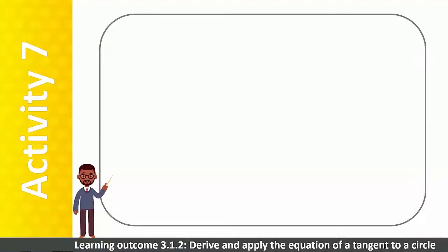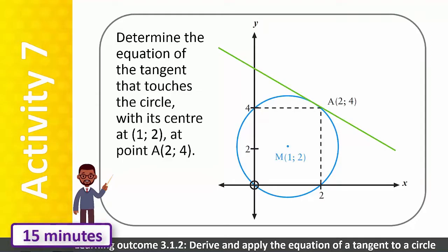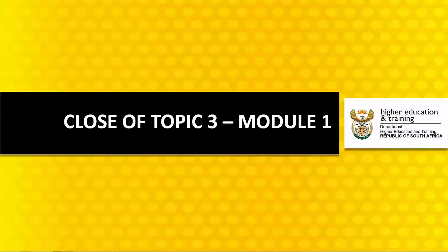As an activity, determine the equation of the tangent that touches the circle with its center at (1, 2), at point A (2, 4). Work with a partner and demonstrate how you would teach this to your students. We've reached the end of Topic 3, Module 1. With the right tools and knowledge, students can master Cartesian geometry.